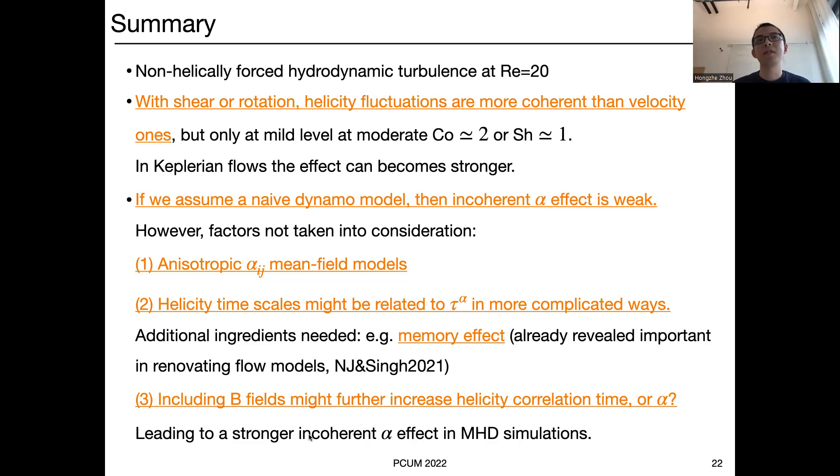To summarize: we performed non-helically forced hydrodynamic turbulence simulations. Both rotation and shear increase the scale separation between helicity fluctuations and velocity fluctuations. If we assume isotropic alpha and apply double averaging, we might conclude the incoherent alpha effect is weak. However, we have not accounted for several additional ingredients: the alpha tensor must be anisotropic in shear flows; the helicity timescale may be connected to tau_alpha through a memory effect, where turbulent coefficients depend on the history of the flow rather than just within one eddy turnover time; and including the magnetic field in MHD simulations — especially with a small-scale dynamo — might change the results.